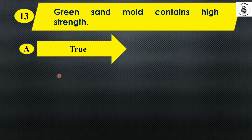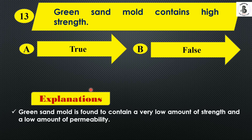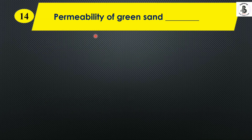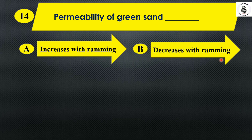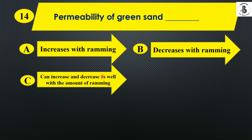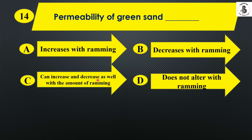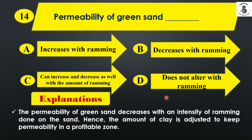Question 11: Green sand mold contains high strength — Option A: True. Option B: False. Green sand mold is found to contain a very low amount of strength and low permeability, so the answer is False. Question 12: Permeability of green sand — Option A: increases with ramming. Option B: decreases with ramming. Option C: can increase and decrease with ramming. Option D: does not alter with ramming. The permeability of green sand decreases with the intensity of ramming done onto the sand, and the amount of clay is adjusted to keep permeability in the profitable zone. So the right answer is Option B, decreases with ramming.